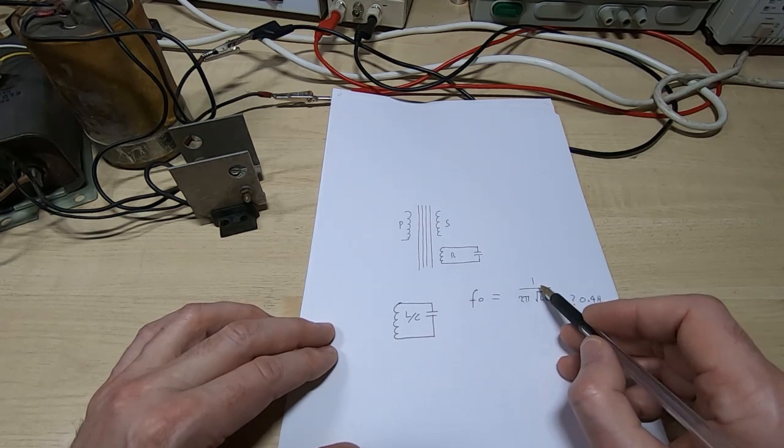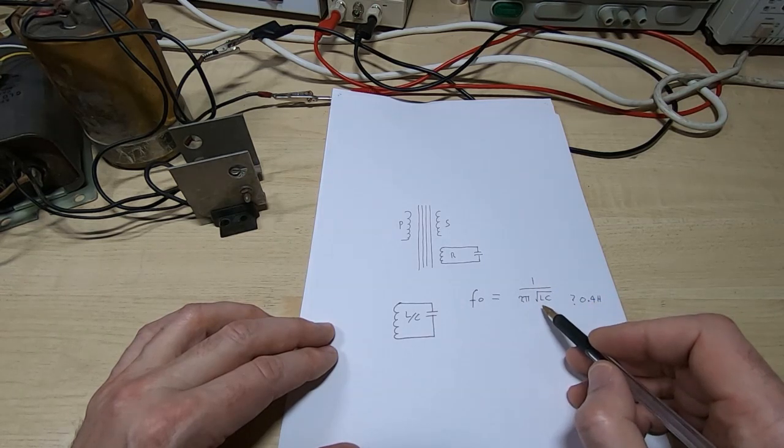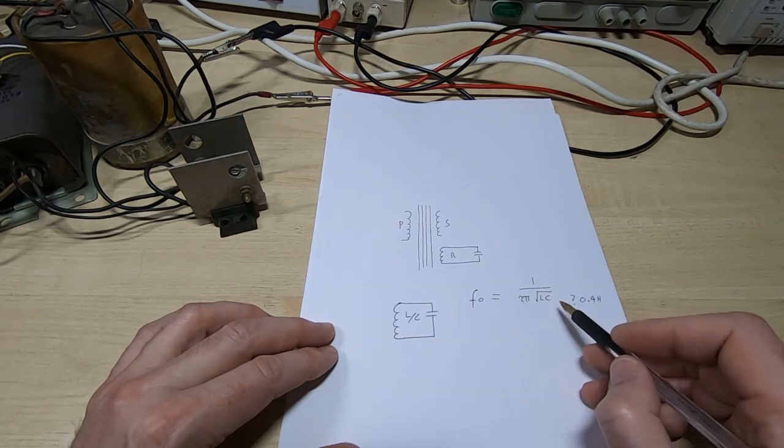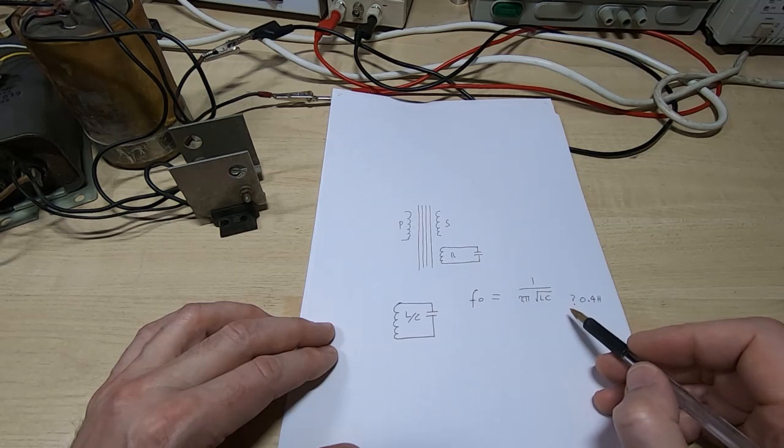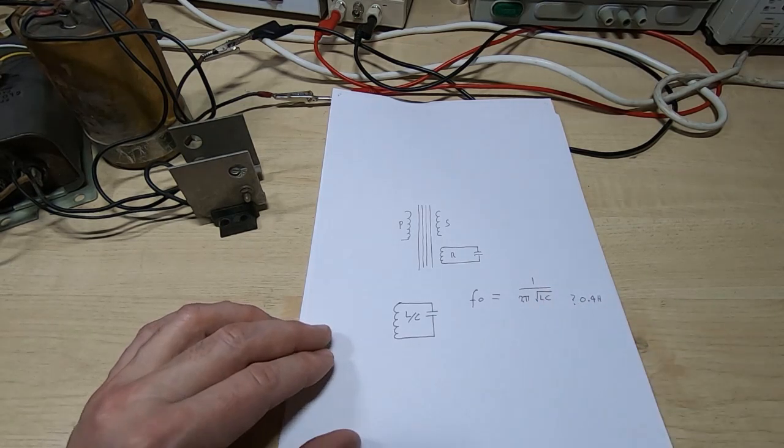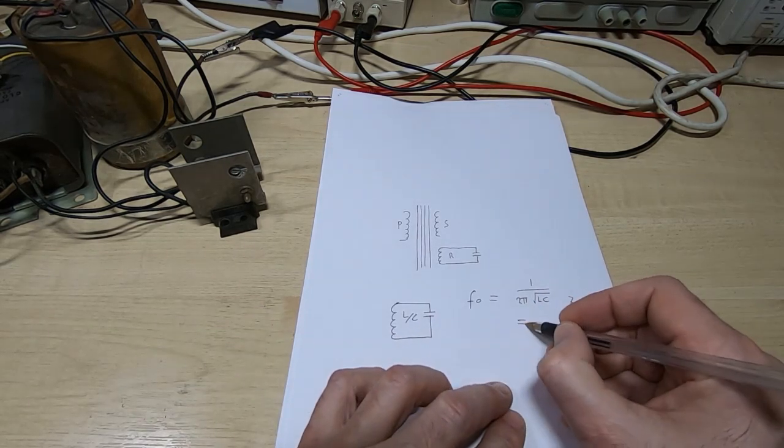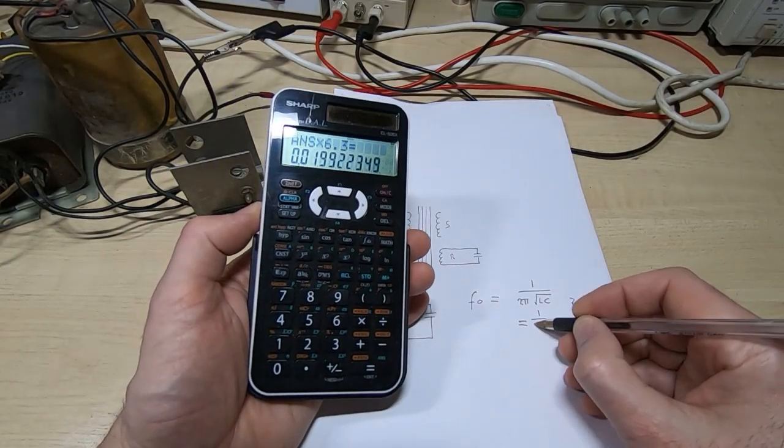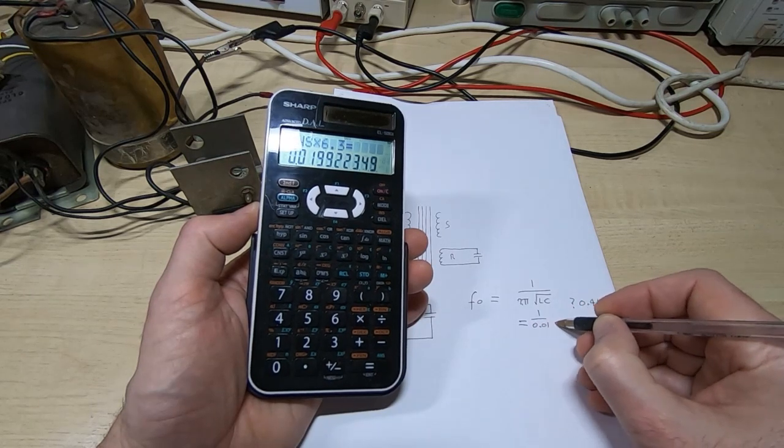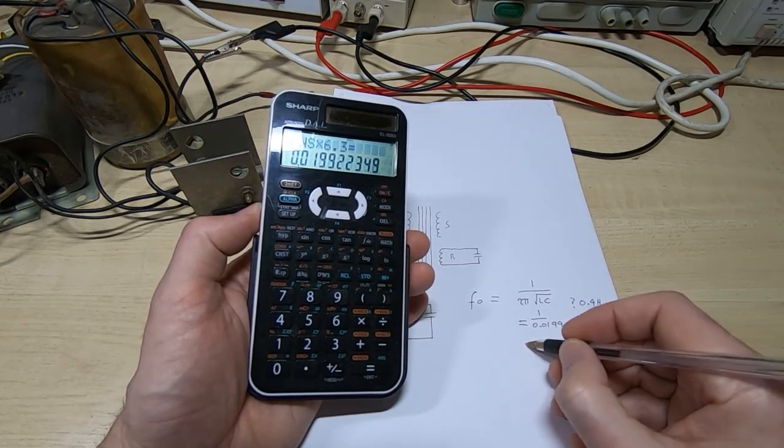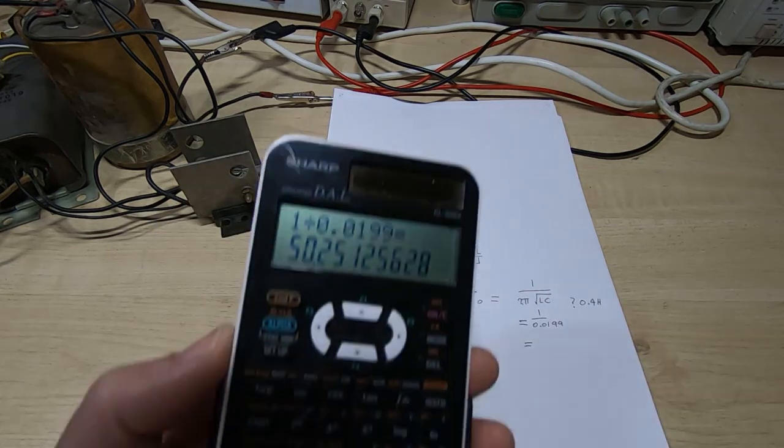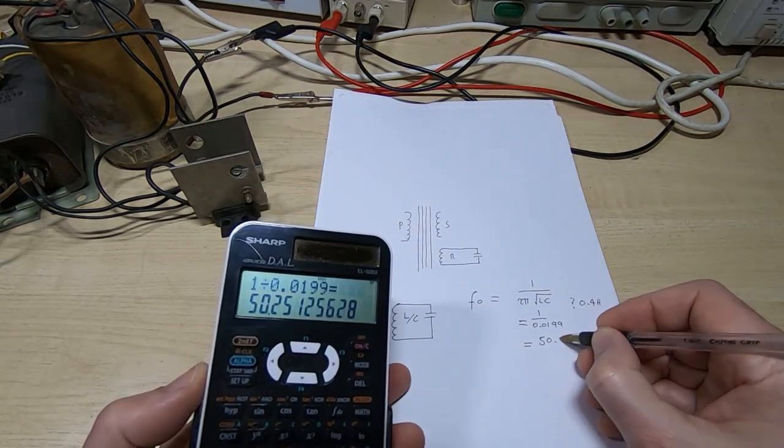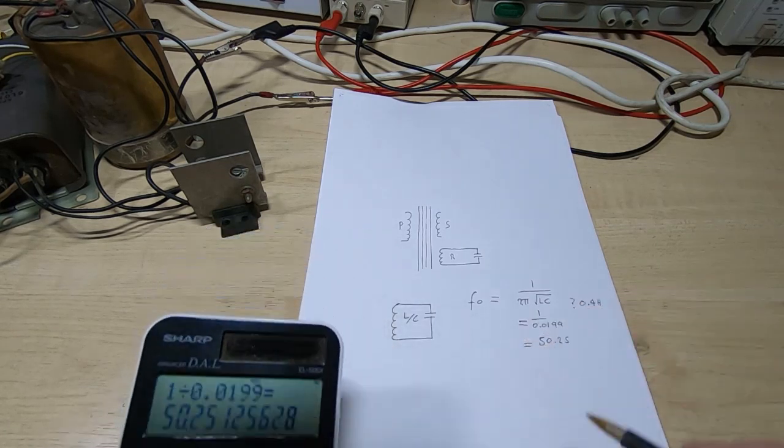And so what we have here is one over two pi times the square root of L, which is 0.4, times C, which is 25 times 10 to the minus 6. So I'll just calculate that and we'll see what the result is. So that works out as one over 0.0199, which is equal to 50.25. And the result is in Hertz.